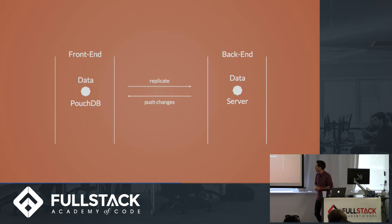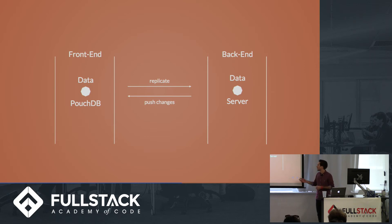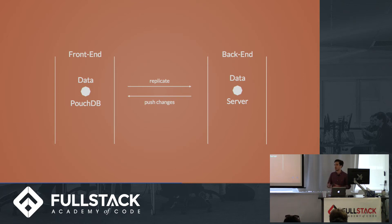Another cool thing PouchDB does is let you listen to changes from the server. If another client syncs their data to the server, the server will push that information back to the front-end and you will receive those changes without having to query the database again. This is essentially the architecture of how an app would work using CouchDB.